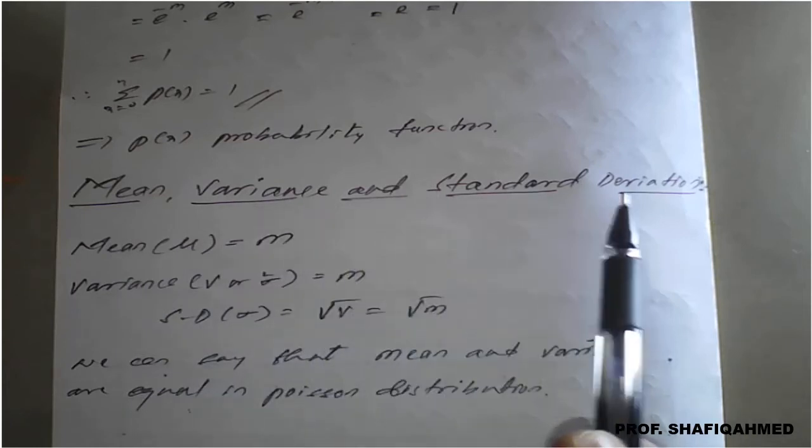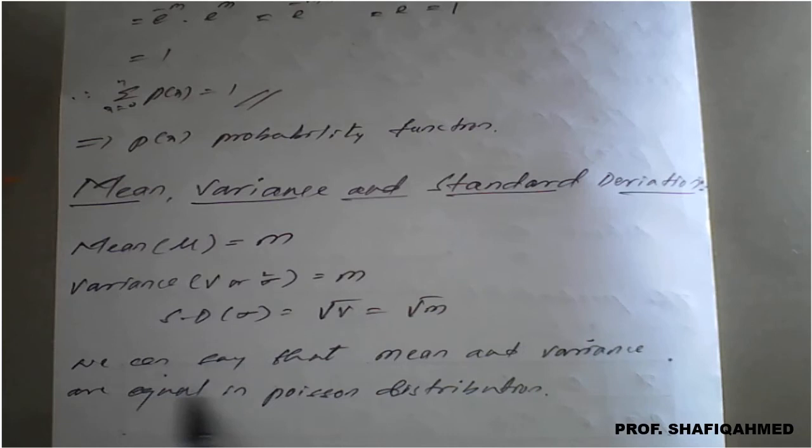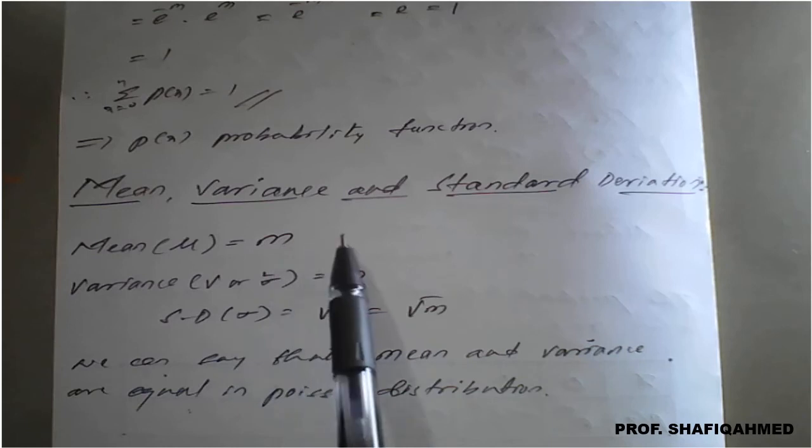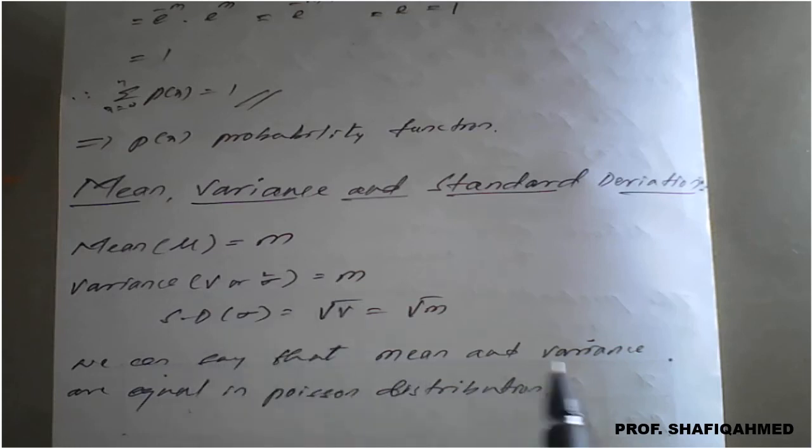Now, mean, variance, and standard deviation of the Poisson distribution. No proof, just remember the result. Mean of Poisson distribution is denoted as m, where m is nothing but mean, and we know that m is also nothing but np. Variance is given by m; both mean and variance are the same, equal in the Poisson distribution.